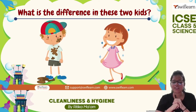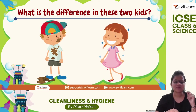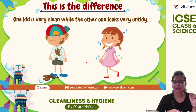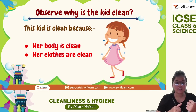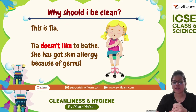Looking at two kids on the screen — what is the difference? Kid number one is a bit dirty and kid number two is very clean. One kid looks very untidy while the other looks clean and fresh. We can see her clothes are clean and her body is clean. The other kid, Tia, asked: why should I be clean? She doesn't like to bathe and has a skin allergy because of germs.